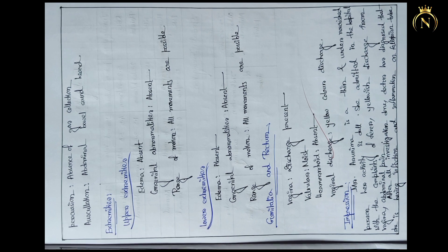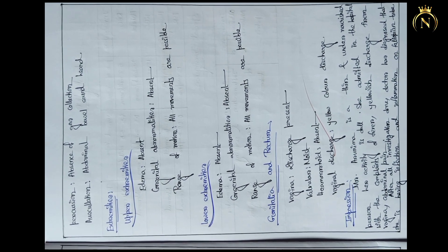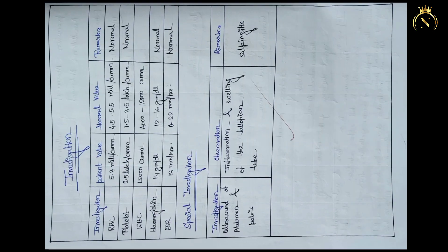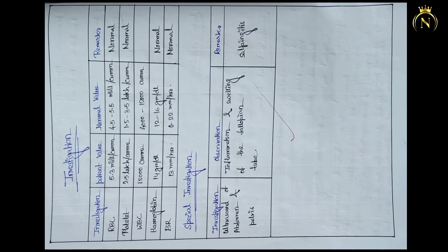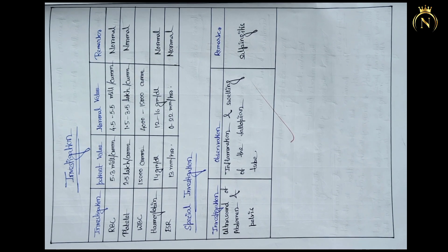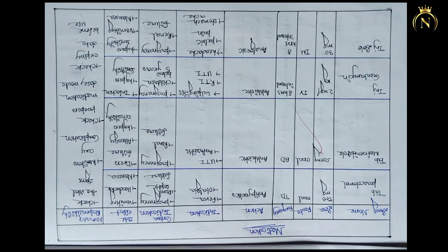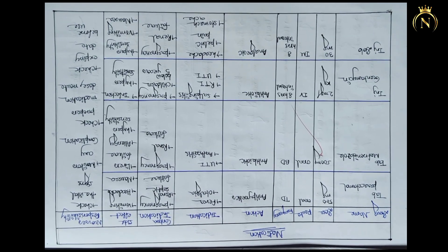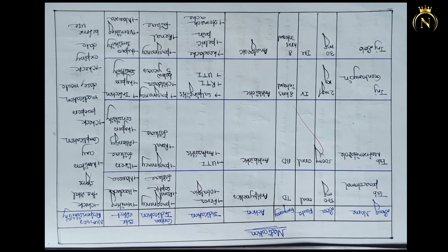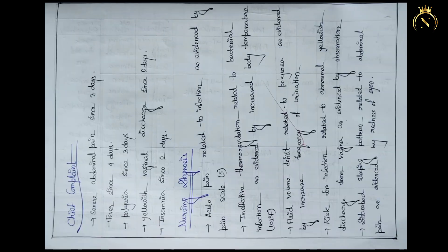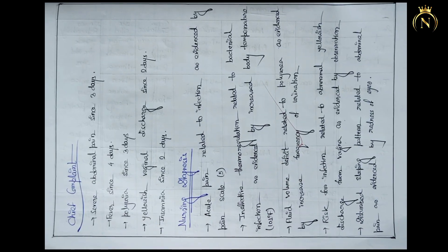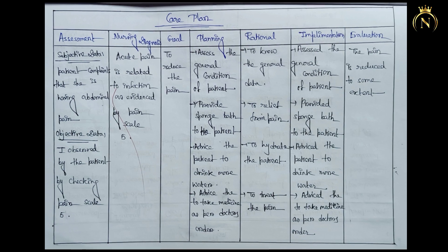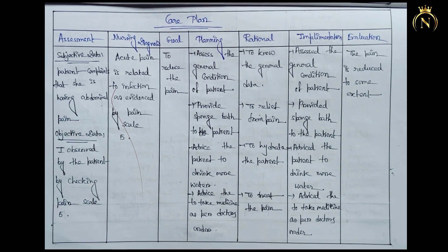For each person, you have to write what kind of abnormality is present. After that, investigations and personal investigations should be mentioned in the care plan. Then the medication chart — what medications were given — and the chief complaint should also be included.